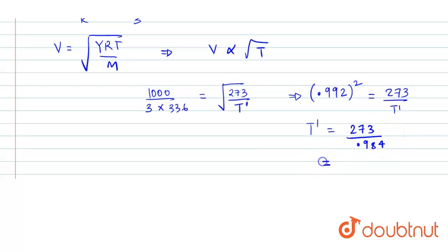So in degree Celsius, if we have to find, that would be 277.4 minus 273 in degree Celsius, so it would be approximately 4.4 degree Celsius.